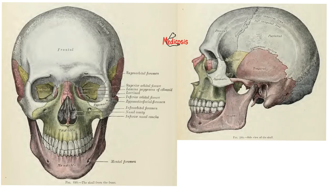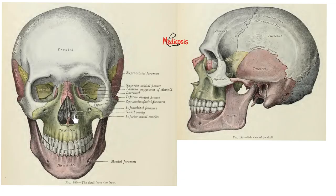Then the paired skull bones, where you have one on each side: two parietal bones, two temporal bones, two zygomatic bones (or zygoma), two lacrimal bones, two maxillary bones (the upper jaw), two nasal bones, two palatine bones, and the inferior nasal conchae — one on the right and one on the left.